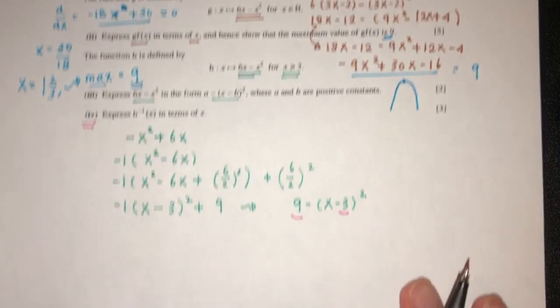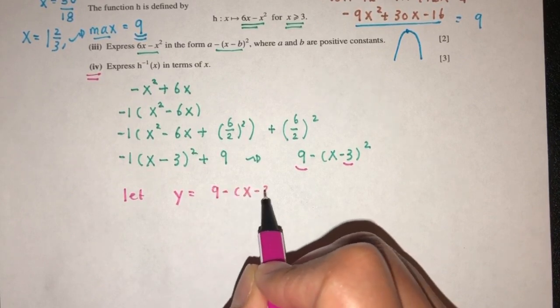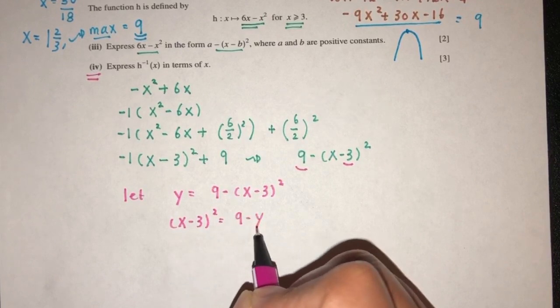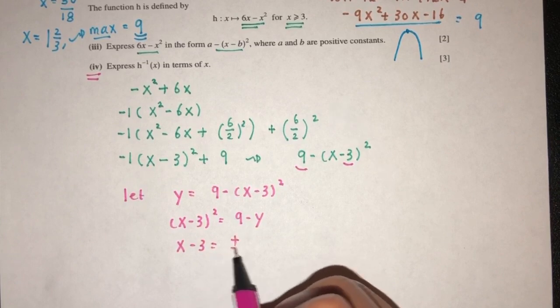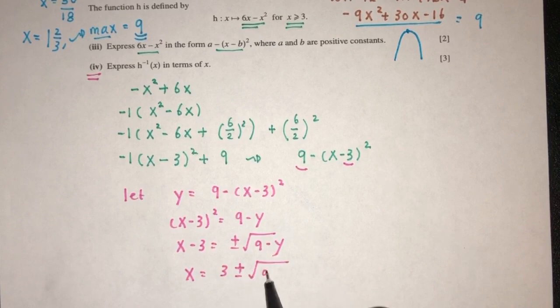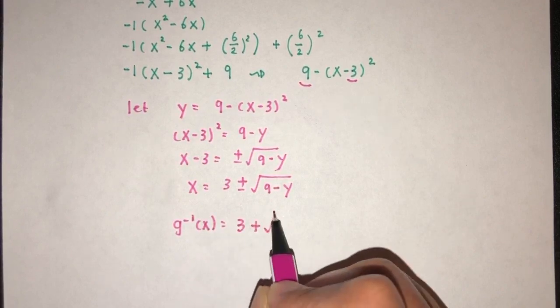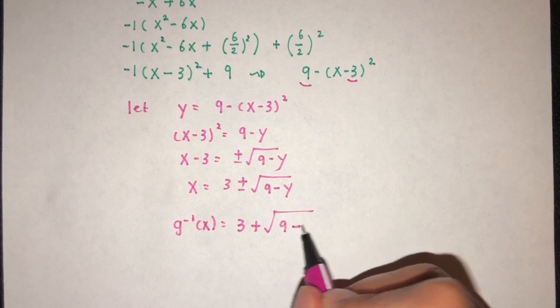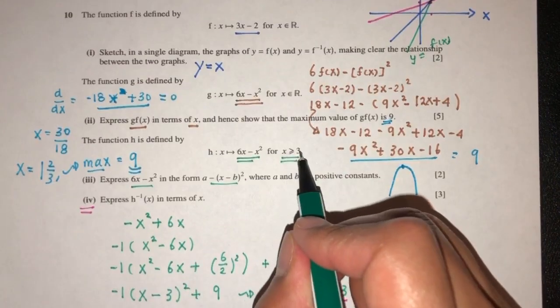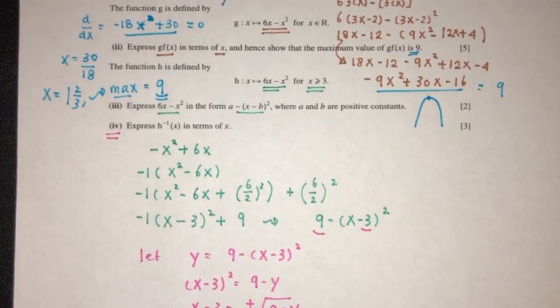Now apart from this, we have to find h inverse. So let y equal to h. (x minus 3)^2 is equal to 9 minus y. x minus 3 will be plus or minus √(9 minus y). Obviously we'll take the value in terms of x and the value of positive √(9 minus x). The reason why we take plus here is because it is defined by x more than 3. And that will be your answer. We have to express h inverse in terms of x.